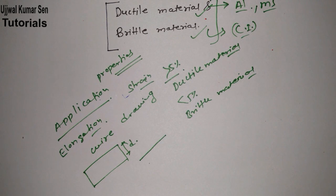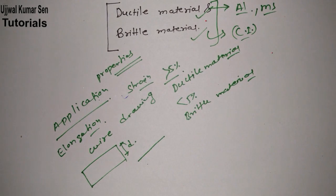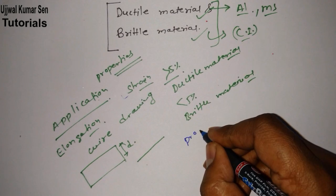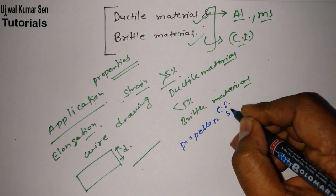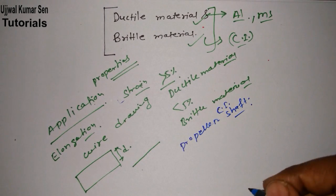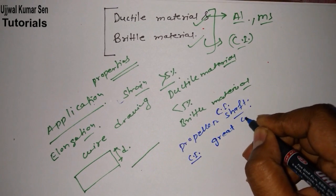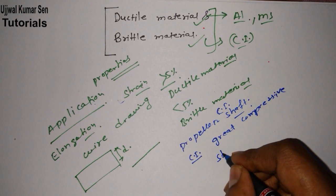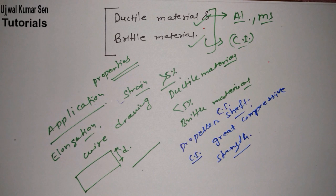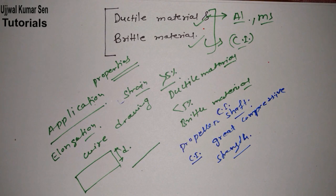If you are talking about the application of brittle material, we use cast iron in the case of a propeller shaft. The reason is that cast iron has great compressive strength. Because of this compressive strength, we use brittle material there.